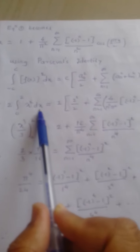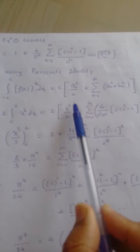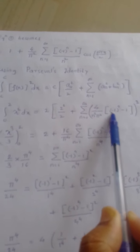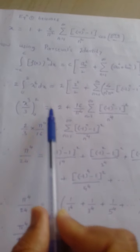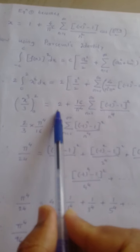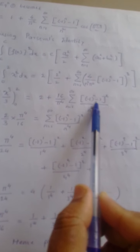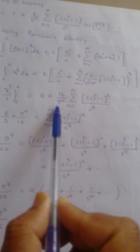Since x² is an even function, the integral from −2 to 2 of x² dx becomes 2 times the integral from 0 to 2 of x² dx. Substituting the values of c, a₀, aₙ, and bₙ, the right side becomes 2 × [2²/2 + summation n from 1 to infinity of (4/(n²π²)) × (−1)^(n−1)]² squared, giving 2 plus (16/π⁴) × summation of (−1)^(n−1)² / n⁴. Evaluating the left side: [x³/3] from 0 to 2.